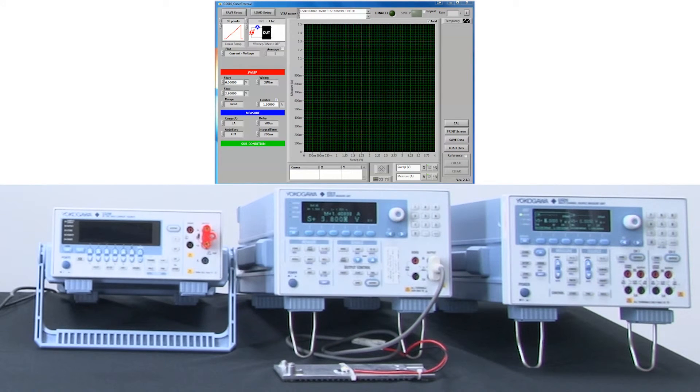I have it all set to go. I'm going to sweep voltage across 50 points from zero volts to 3.8 volts DC. I am sweeping voltage and measuring current as seen in the graphic here.